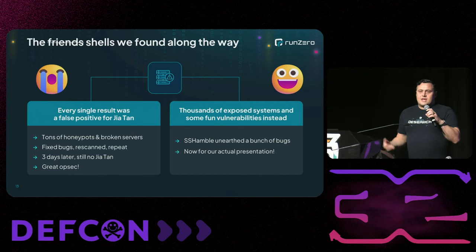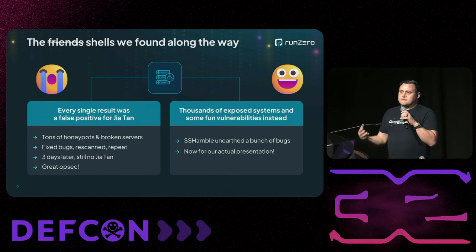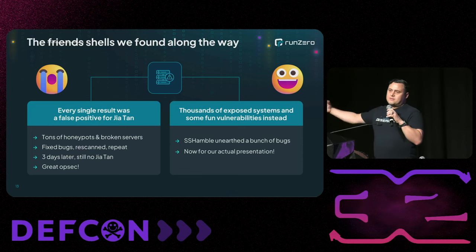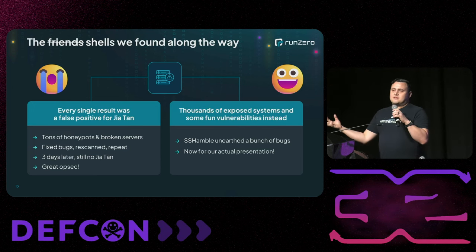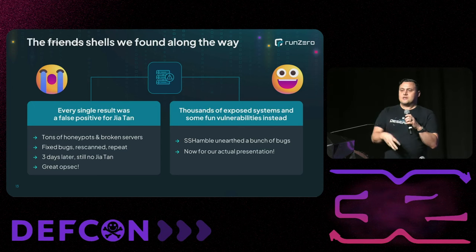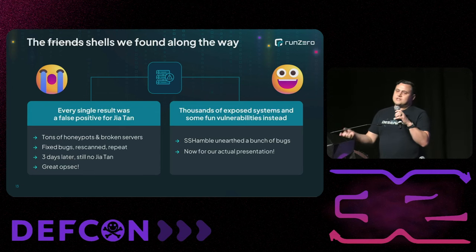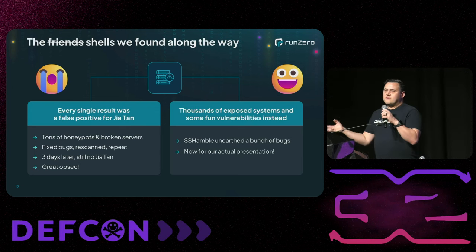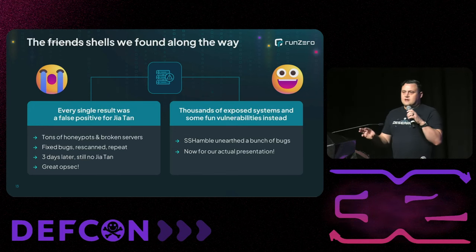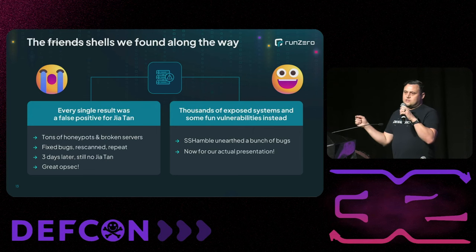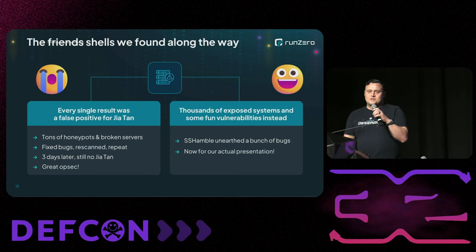Unfortunately every single result we found that we thought was Jia Tan was a false positive — a buggy server with corrupted memory or a service that would accept every fifth or third public key. So we had to try a bunch of random public keys first; if it rejected all those, then try the Jia key with RSA 1024 and 2048. After fixing all the bugs, rescanning, and clicking through all the Digital Ocean abuse notices, we still found no Jia Tan. Whoever this actor was, they had really good opsec.